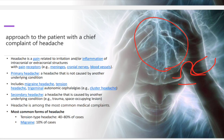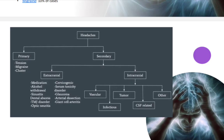Headache pain has primary or secondary causes. Primary causes have no underlying condition, like migraine and tension-type headache. Secondary causes have an underlying condition, like trauma or space-occupying lesions. Most patients come with primary causes, but the most serious cases are secondary. Primary causes include tension-type, migraine, cluster headache, or extracranial causes. Secondary causes include things like glaucoma, sinusitis, alcohol, medication, or optic neuritis.